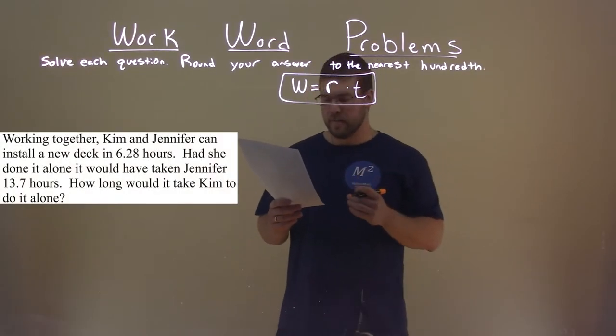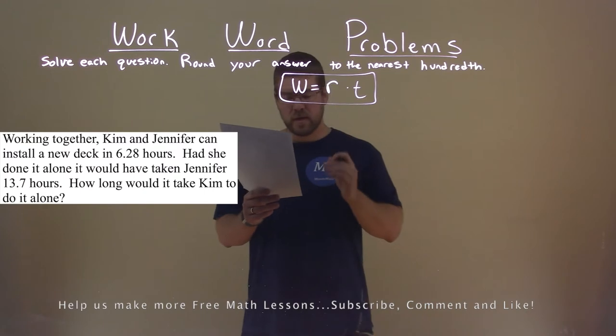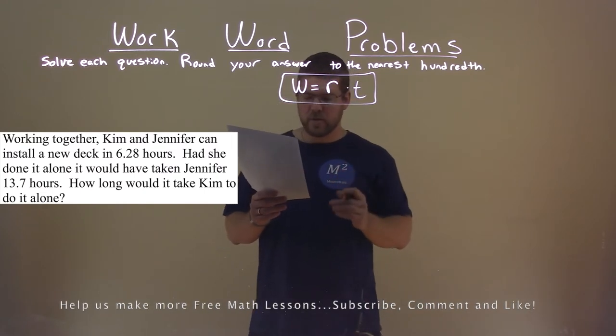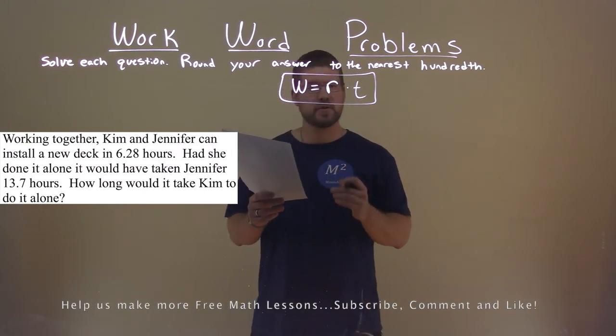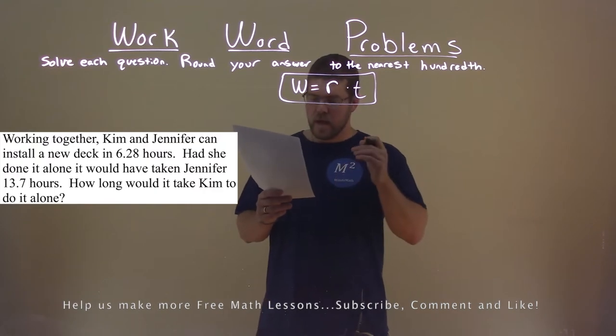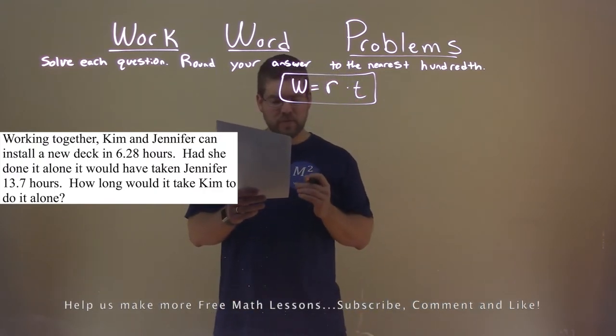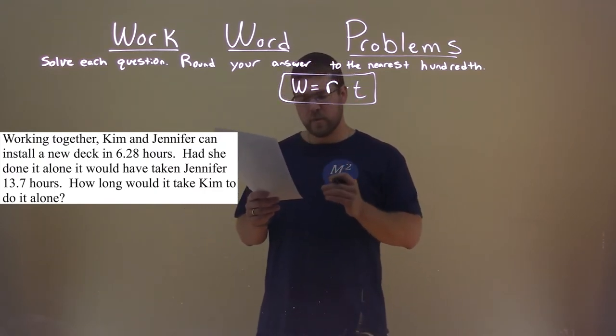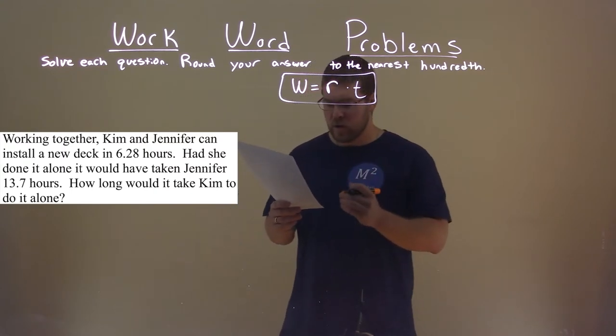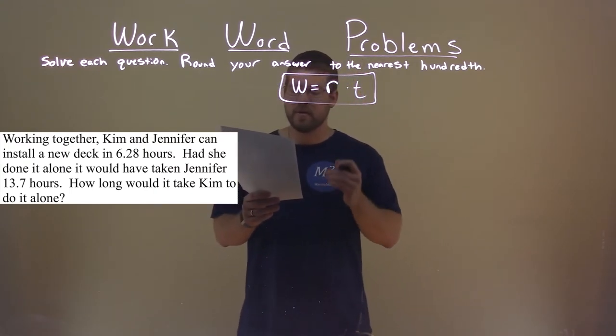We're given this problem right here. Working together, Kim and Jennifer can install a new deck in 6.28 hours. Had she done it alone, it would have taken Jennifer 13.7 hours. How long would it take Kim to do it alone?